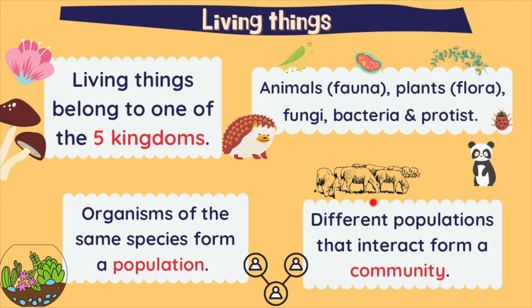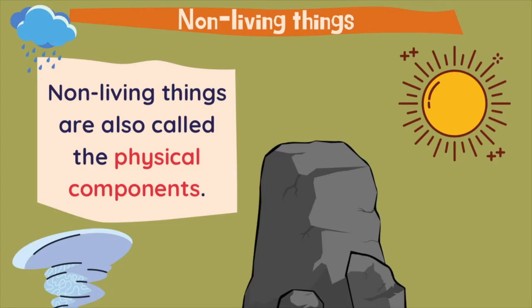Different populations that interact with each other form a community. So the community is the combination of different populations. And the population is the combination of many organisms of the same species.